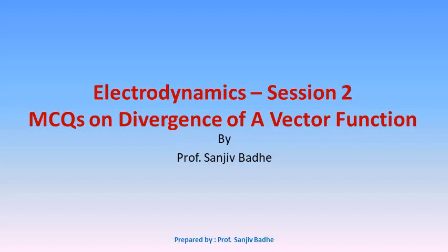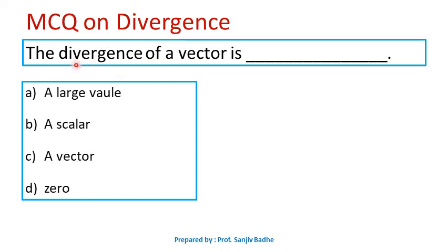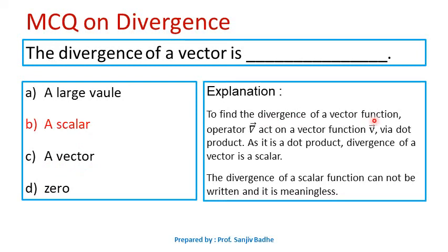Let us start with session number two: MCQs on divergence of a vector function. Question number one: the divergence of a vector is — options are: a) large value, b) a scalar, c) a vector, d) zero. We know divergence of a vector function can be obtained by making a del operator act on a vector function via dot product, and dot product results in a scalar. Therefore, divergence of a vector function is a scalar, so option B is correct.